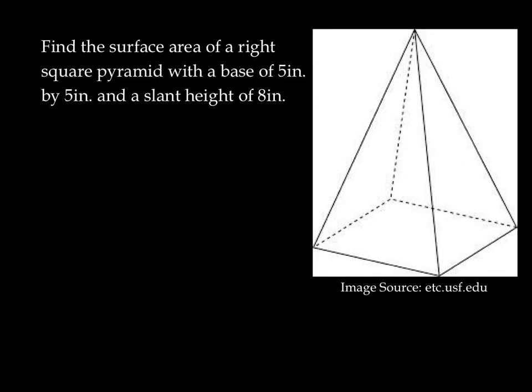So here's a question for us. Find the surface area of a right square pyramid with a base of 5 inches by 5 inches and a slant height of 8 inches. Now, I should take a moment. A right square pyramid means that the base is a square. So we have 5 inches by 5 inches. And our slant height, not the height, but the slant height, that's the distance here along the edge is 8 inches.